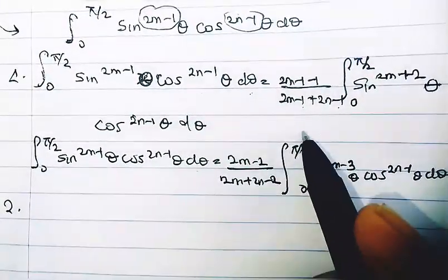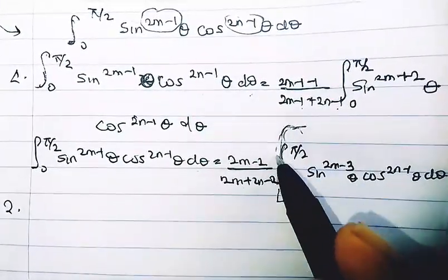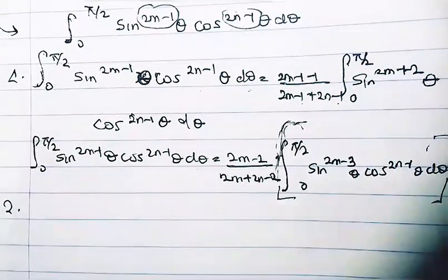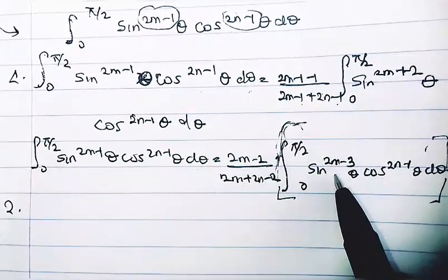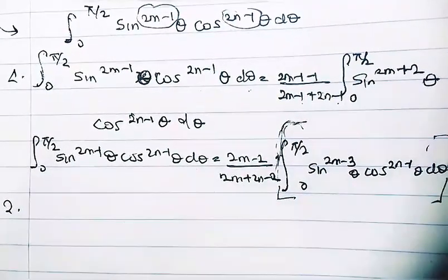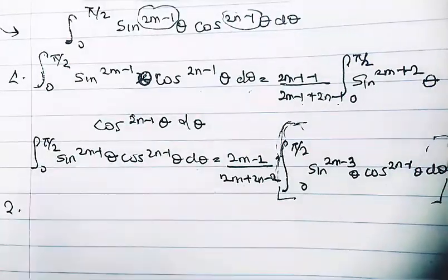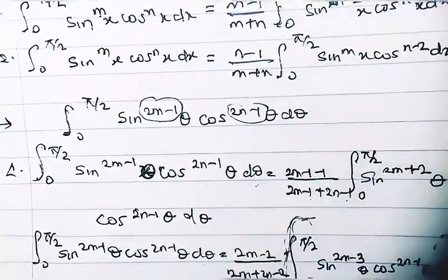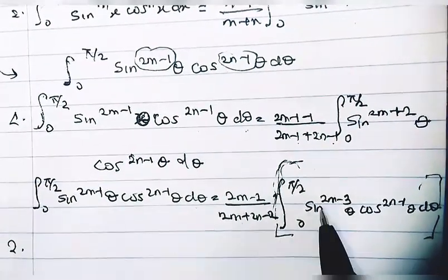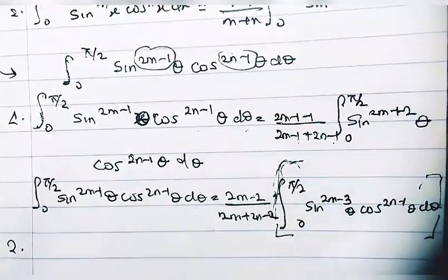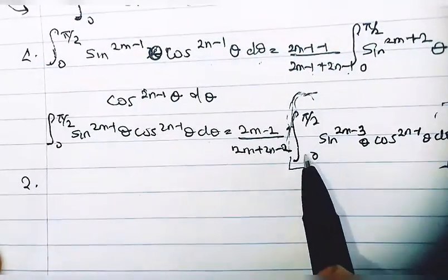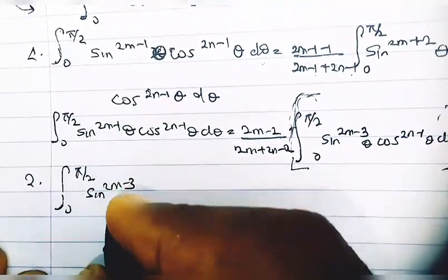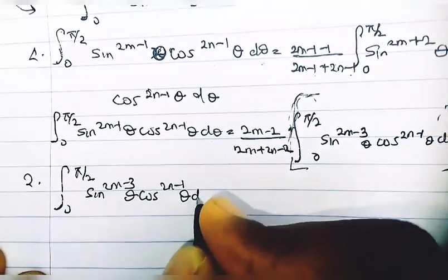For step two, I'm going to take the remaining integral and impose it on the second reduction formula. That integral is: from zero to pi/2 of sine^(2m-3)(theta) cos^(2n-1)(theta) d-theta. I replace m with (2m-3) and n with (2n-1) in the second reduction formula.